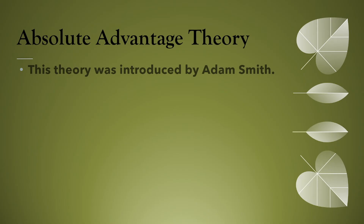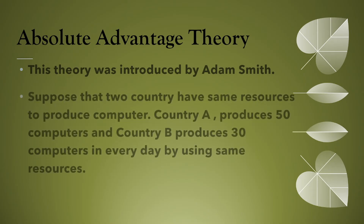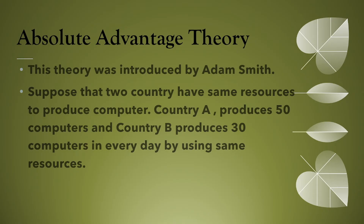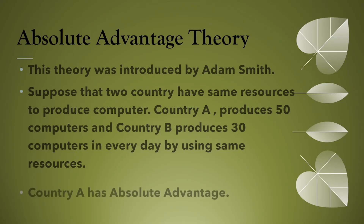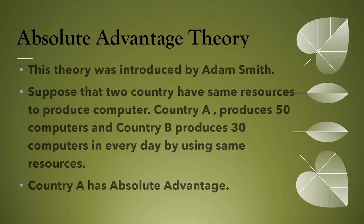This theory was introduced by Adam Smith. Suppose that two countries have the same resources to produce computers. Country A produces 50 computers and country B produces 30 computers every day by using the same resources. This means country A has absolute advantage, as it produces more than country B by using the same resources.